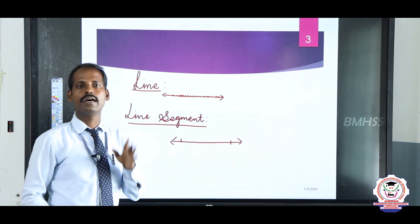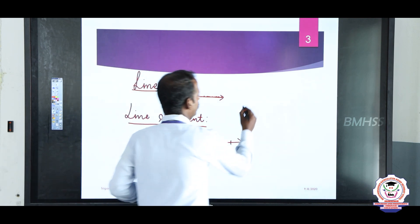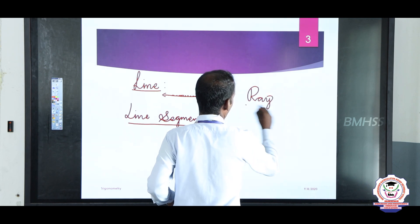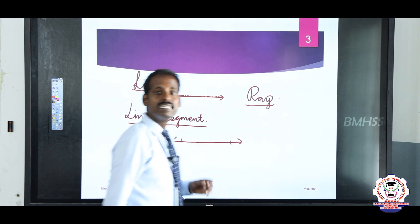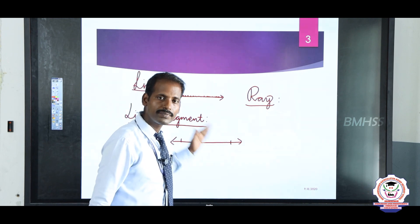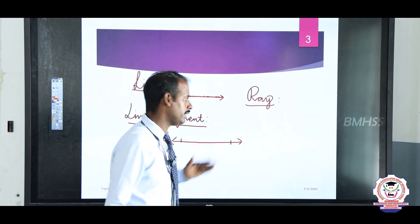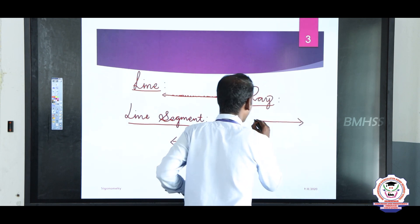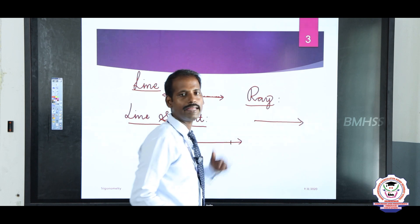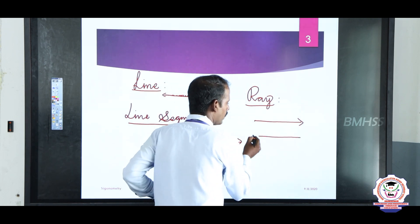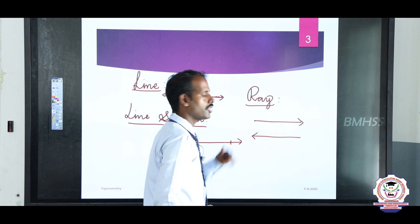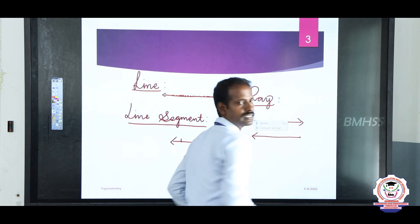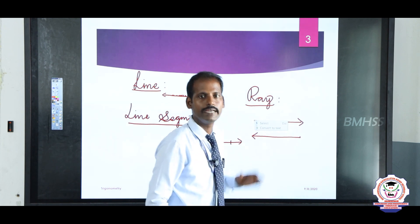And the next one: ray. What is a ray? A ray is a line passing through many points. It has one starting point and on the other side no end point — that is called a ray. Here the starting point is going on one side; it also has one starting point and on the other side no end point. That is called a ray.